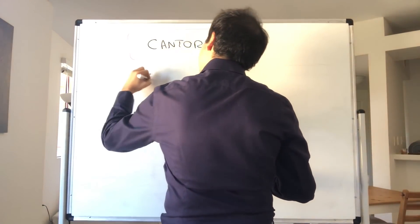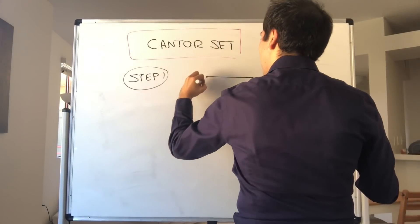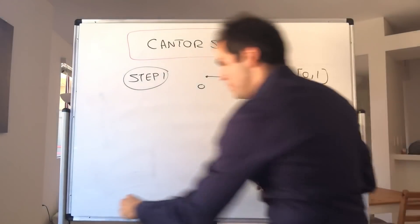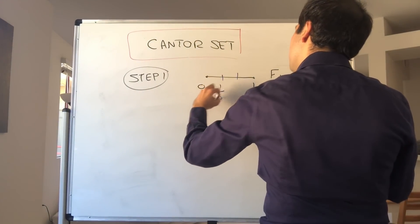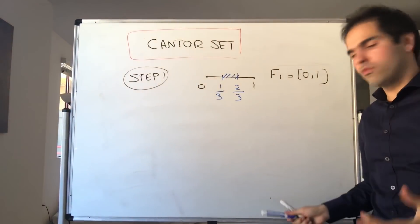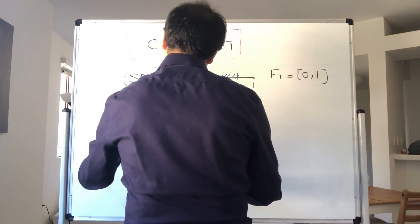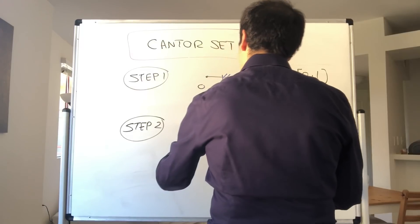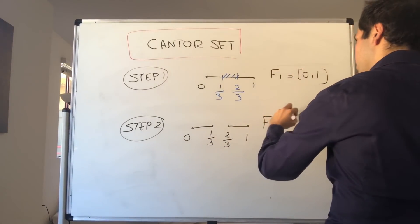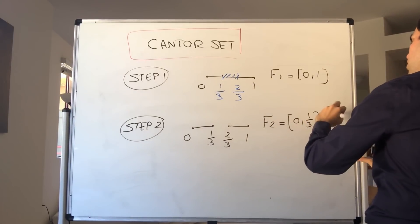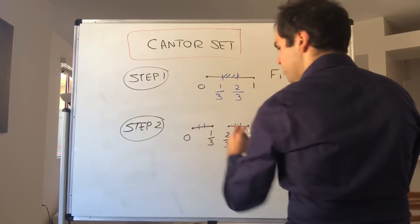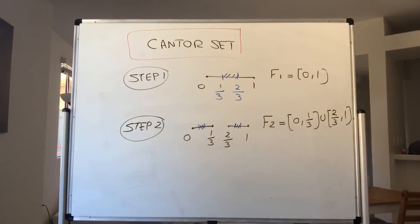Step one: start with the interval zero comma one, so F1 is [0,1]. Then you split this into three pieces using the numbers one-third and two-thirds, and remove the middle piece. Once you remove it, you get two sub-intervals, and those are called F2. So you have zero to one-third and two-thirds to one, giving F2 = [0, 1/3] ∪ [2/3, 1].